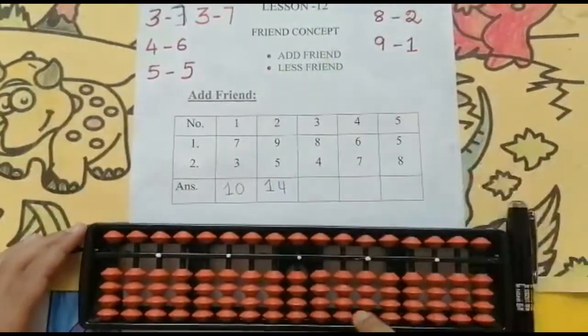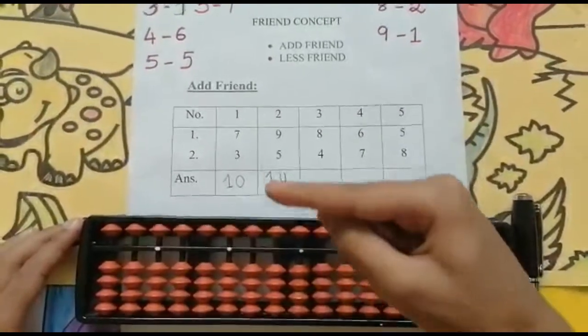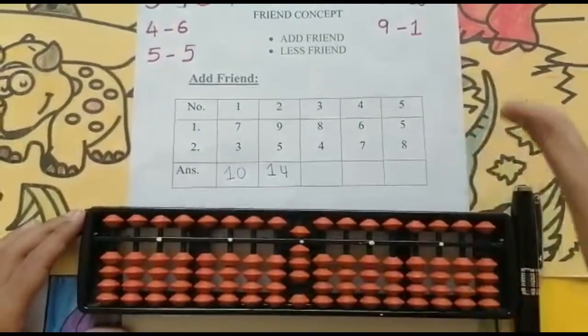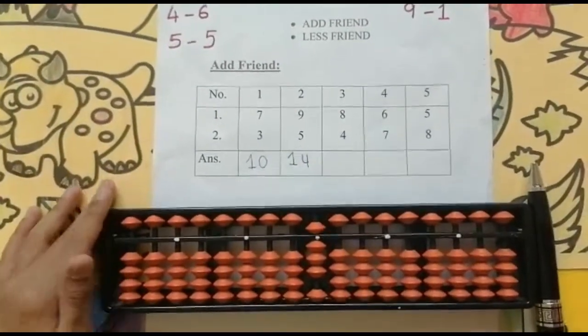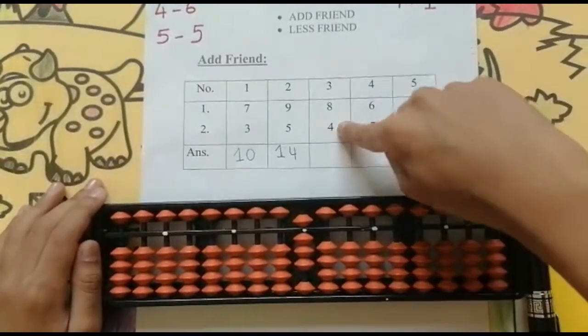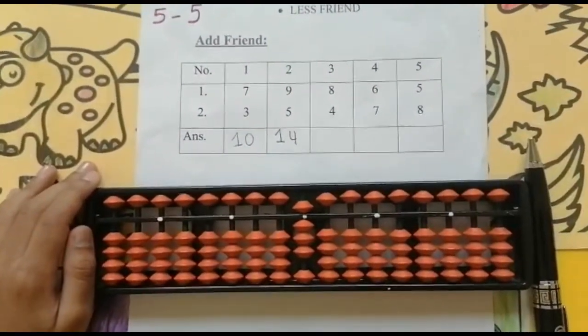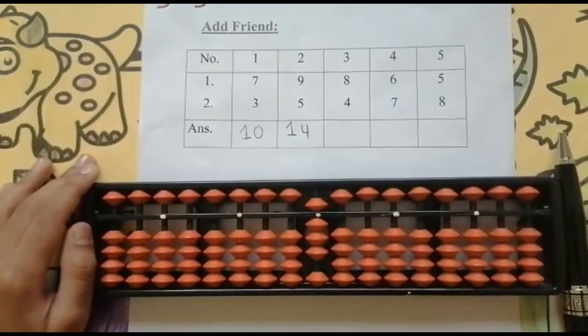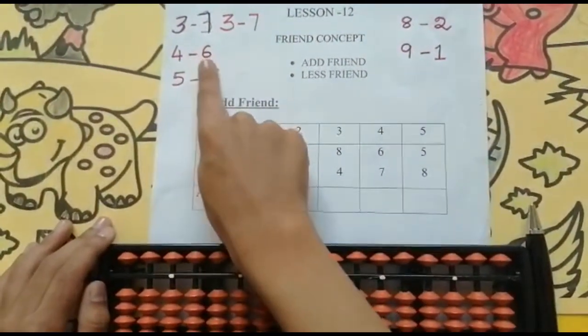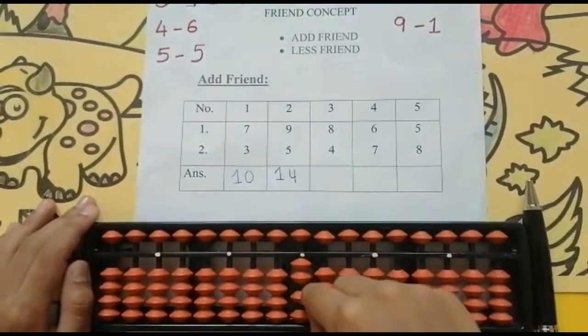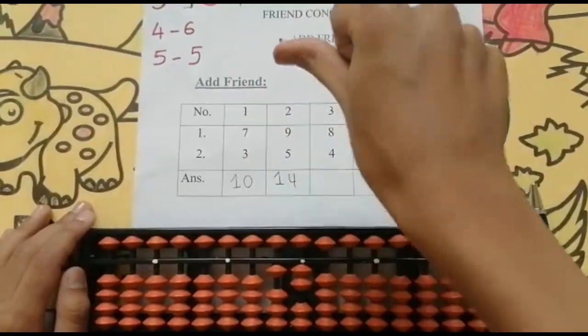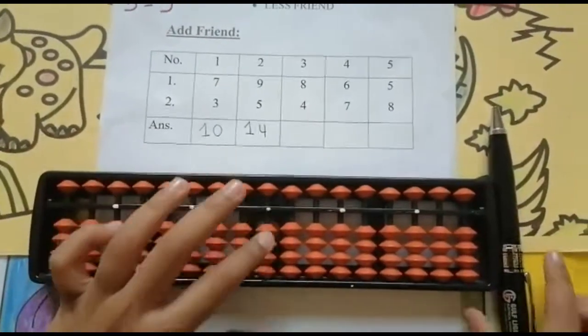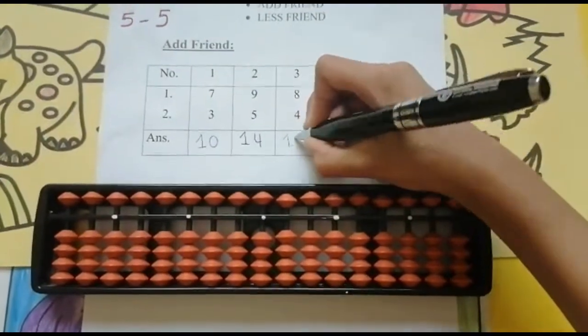The next sum is 8 plus 4. Look above and below. Five, six, seven, eight. The next number to be added is four. We need to add four, is it possible? Not possible because I have only one value. Now friends concept comes. Friend of four is six. I will reduce six and then I will add ten. Keeping the finger got twelve, ten, eleven, twelve. Set zero and the answer is twelve.